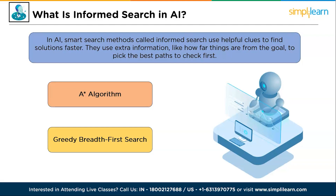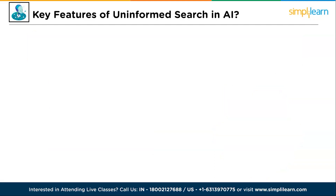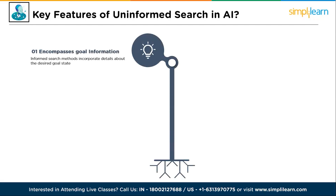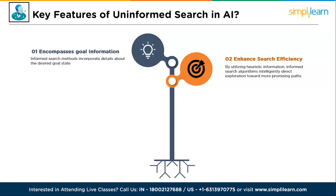Some features of informed search algorithms in AI: the first one is encompasses goal state information — informed search methods incorporate details about the desired goal state, allowing the algorithm to make more informed decisions during the search process, resulting in better path choices. The second one is enhances search efficiency — by utilizing heuristic information, informed search algorithms intelligently direct exploration towards more promising paths, leading to quicker convergence to a solution and often reducing the overall search effort.